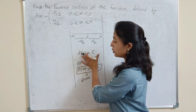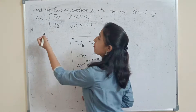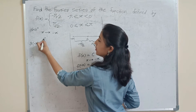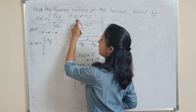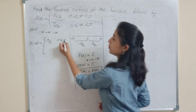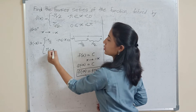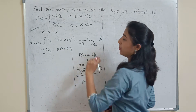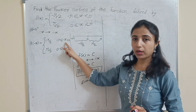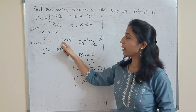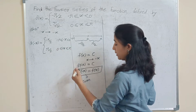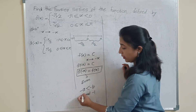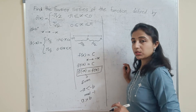Now let's check by definition whether this function is odd or even. We replace x by minus x throughout. So f(minus x) equals minus π/2 for the interval where minus π ≤ minus x < 0, and π/2 for 0 < minus x ≤ π. Now when x is negative we convert the interval to positive terms by multiplying by minus sign. We know that if we multiply an inequality by minus 1, the direction of the inequality reverses — less than becomes greater than.